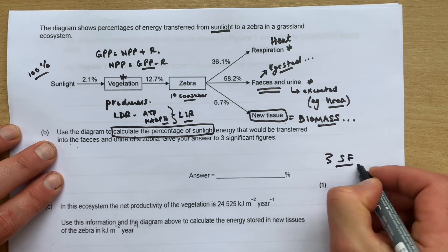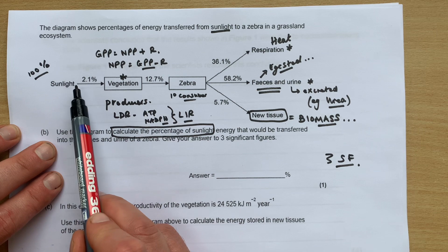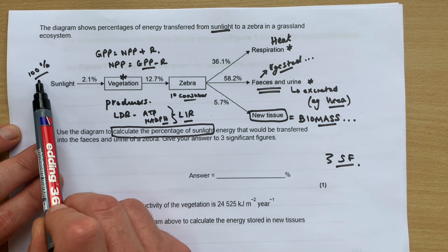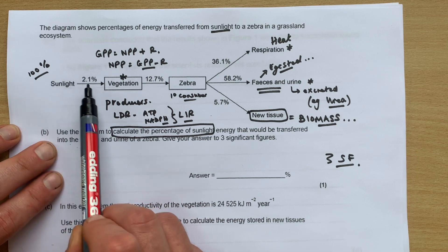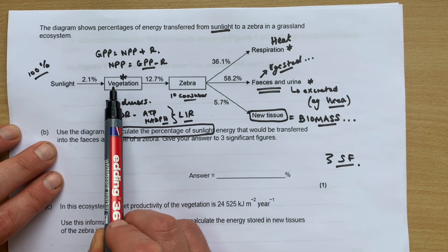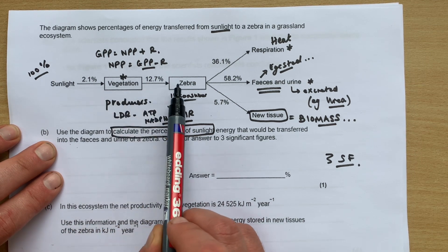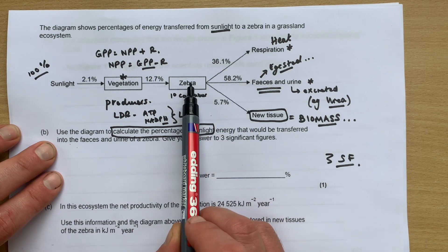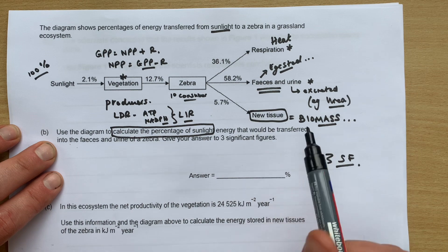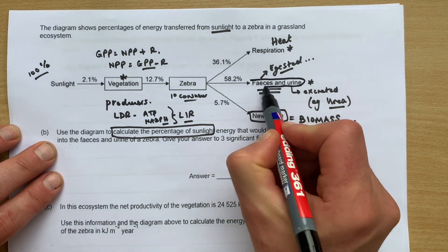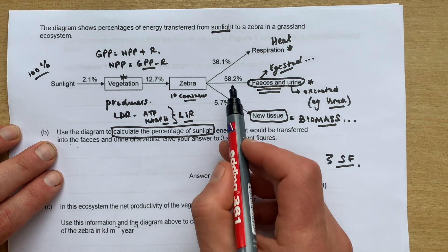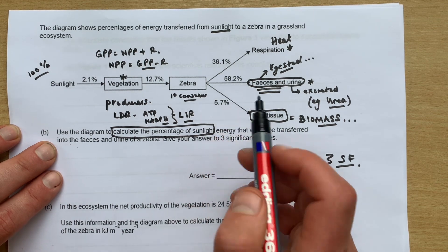And so we want three significant figures. So percentage of sunlight - we can start with 100 percent, and 2.1 percent of that energy ends up in vegetation, and 12.7 percent of that ends up in zebra, and 58.2 percent of that value ends up as the faeces and the urine.